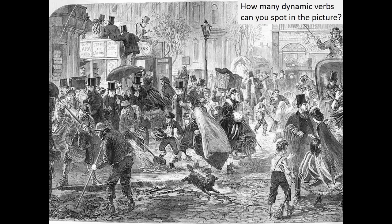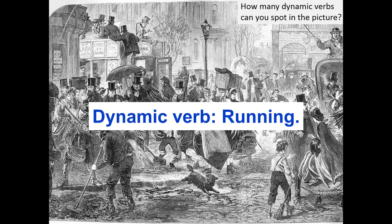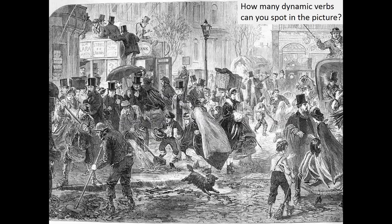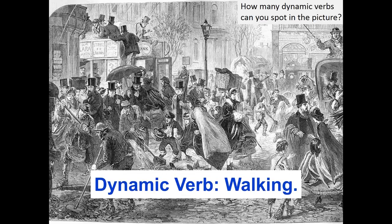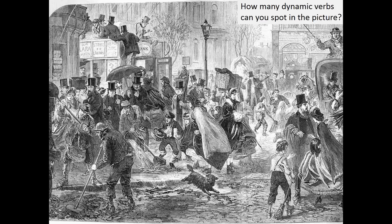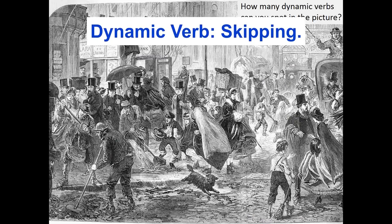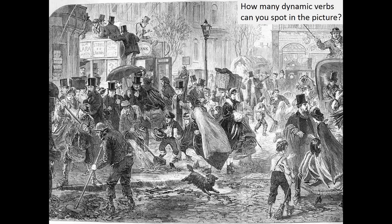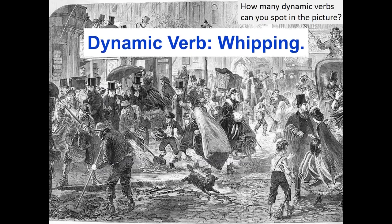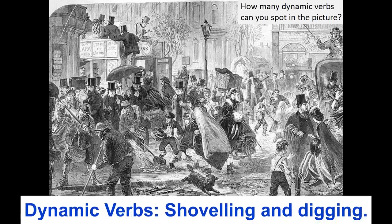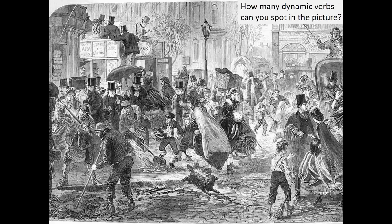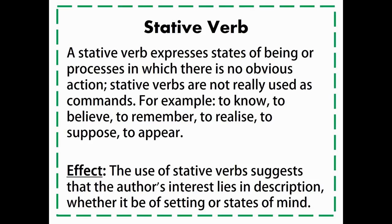Let's look at this picture. We can see a dog and it's running — that's a physical action, that's a dynamic verb. We can see sweeping, climbing, walking. That boy looks like he's skipping. The man has a whip and he's whipping the horse. The man is driving as well — that's physical. We see shoveling, digging, throwing. So all of those verbs are physical verbs, and so they're dynamic verbs.